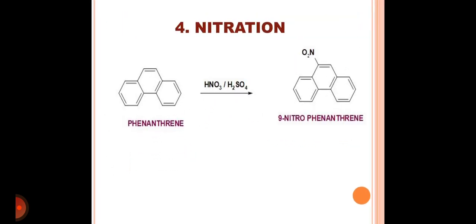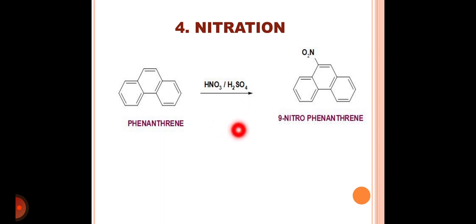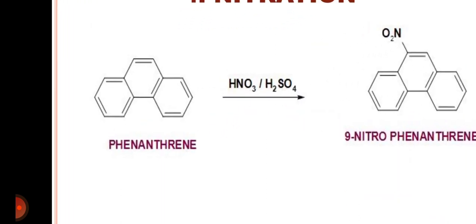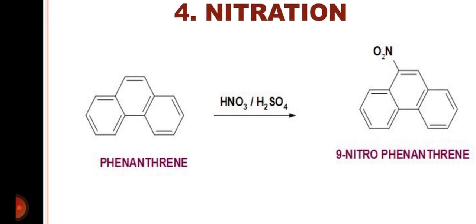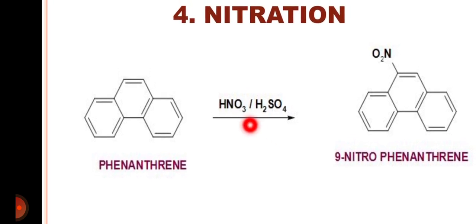The next reaction is the nitration reaction. This reaction also takes place at position number 9 and is an example of an electrophilic substitution reaction. Phenanthrene reacts with nitric acid in the presence of sulfuric acid.